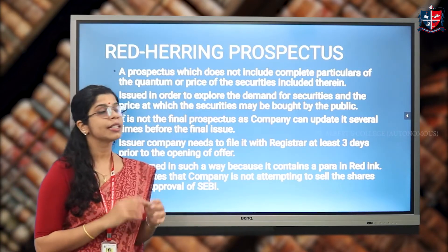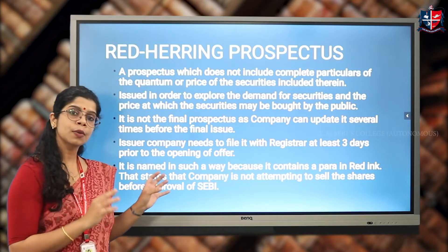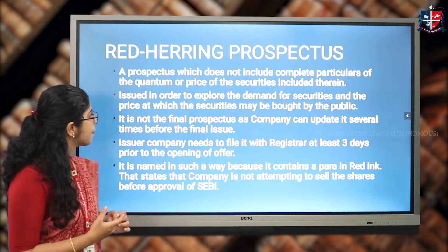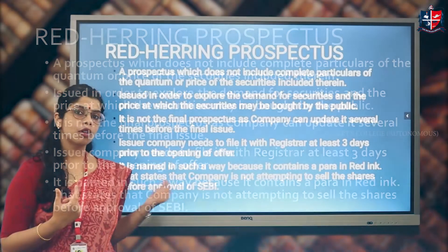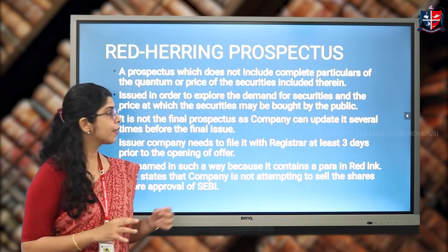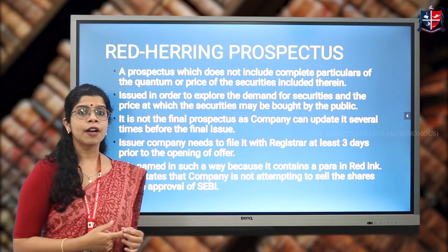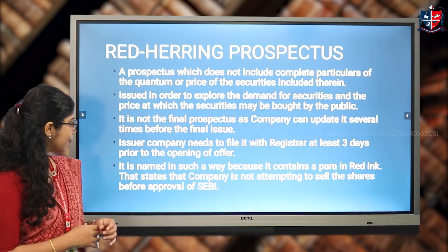A red herring prospectus is defined as a prospectus which does not include the complete particulars of the quantum or price of the securities included therein. It contains sufficient information based on which prospective shareholders can bid for the shares. It is issued in order to explore the demand for securities and the price at which securities may be bought by the public. It is not the final prospectus, as the company can update the information several times before the final issue. A company needs to file it with the Registrar at least three days prior to the opening of the offer.